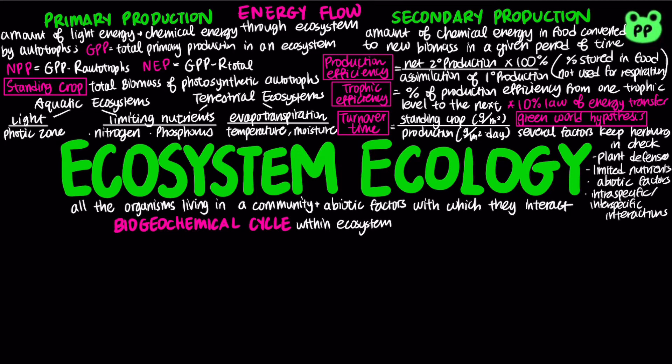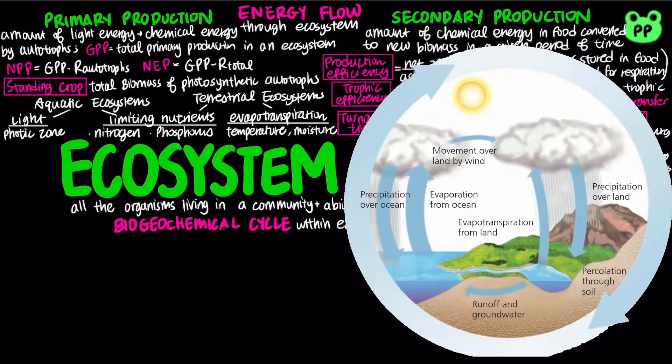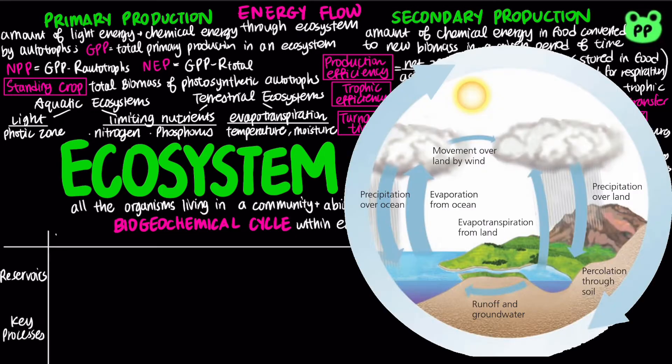Biogeochemical cycles are nutrient circuits in ecosystems that involve biotic and abiotic components. There are four major biogeochemical cycles: the water cycle, the carbon cycle, the phosphorus cycle, and the nitrogen cycle.